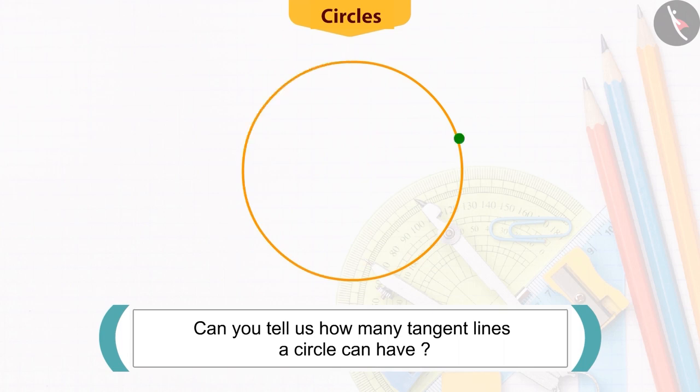You must remember that there is only one tangent at a point of the circle. And circle is a collection of infinite points. Hence, there can be infinite tangents to a circle.